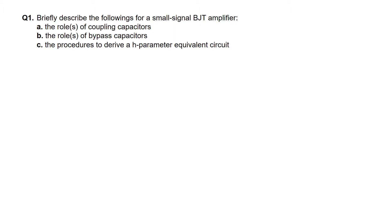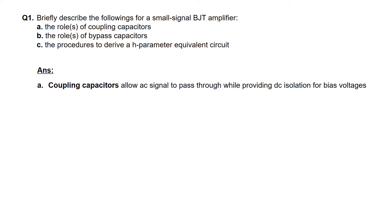For question 1, we are to describe the following for a small signal BJT amplifier. Part A is to describe the role of coupling capacitors. The role of coupling capacitors is basically to allow AC signal to pass through while providing DC isolation for bias voltages.